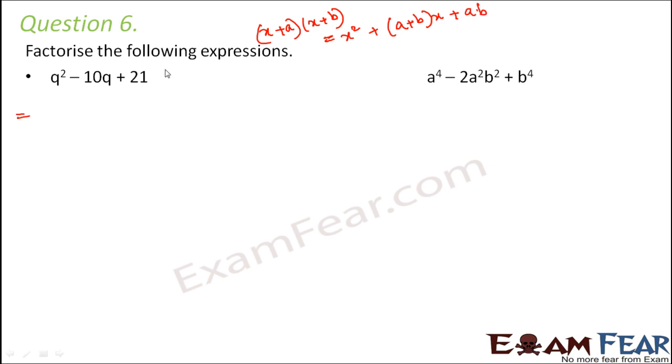So let's see if we can write this equation in this format. So x square is q square here, minus 10 into q. So can we write minus 10 as sum of two numbers? Well, minus 10 can be written as minus 3 plus minus 7. So minus 3 plus minus 7 is equal to minus 10. So this into q.